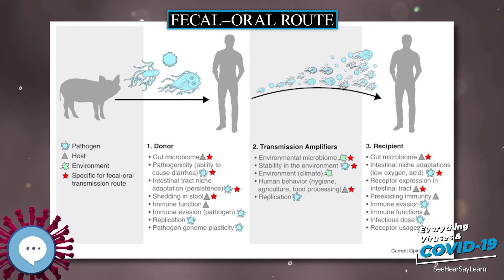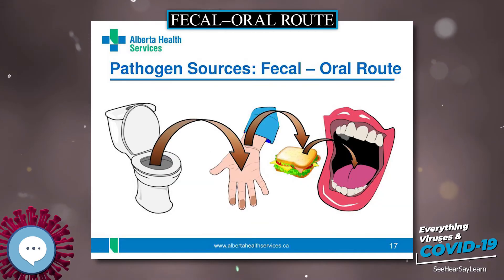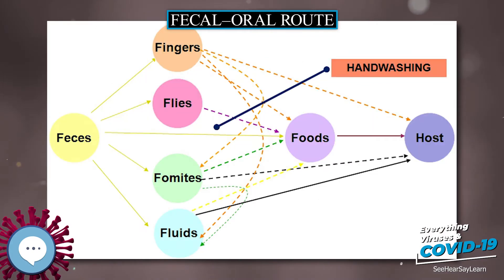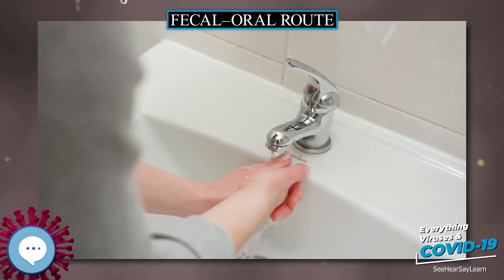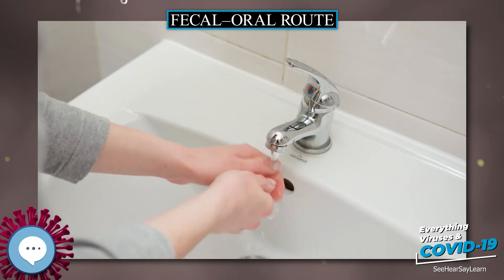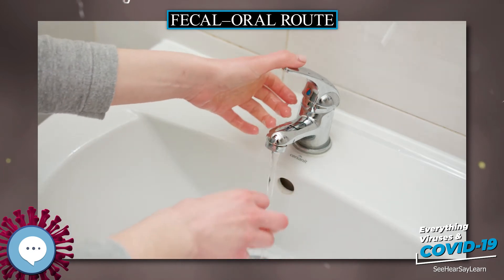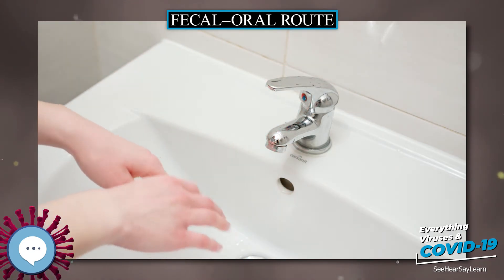These diagrams are set up so that fecal-oral transmission pathways are shown to take place via water, hands, arthropods, and soil. To make it easier to remember, words starting with the letter F are used for each of these pathways, namely fluids, fingers, flies, food, fields, fomites, and objects and household surfaces.